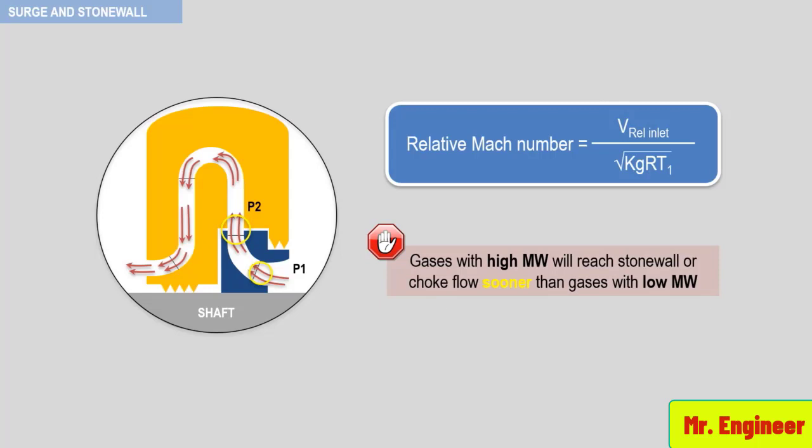Unlike surge, stonewall is not a destructive phenomena. Since horsepower rapidly decreases in stonewall, most dynamic compressor mechanical tests are done in stonewall to reduce shop load horsepower.